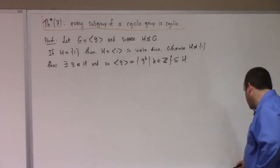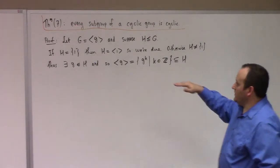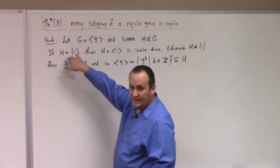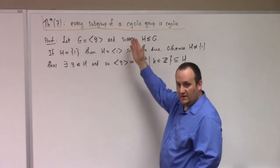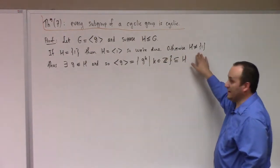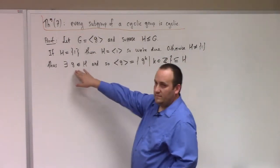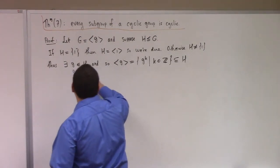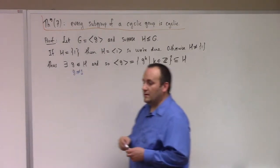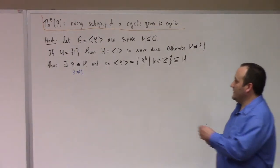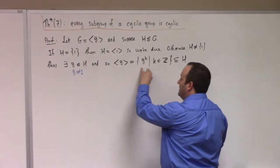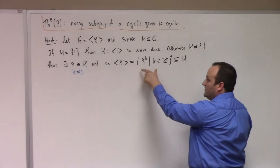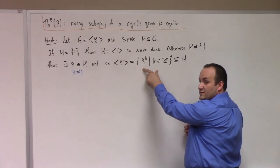Every subgroup of a cyclic group is cyclic. Assume the group is cyclic and take a subgroup. If the subgroup is just the identity subgroup, that's cyclic — done. So suppose it's not the identity subgroup; that means there's some G not equal to the identity. If you look at the cyclic subgroup generated by G, that has to be a subset of H, because H is a subgroup and is therefore closed under powers and inverses of its elements.